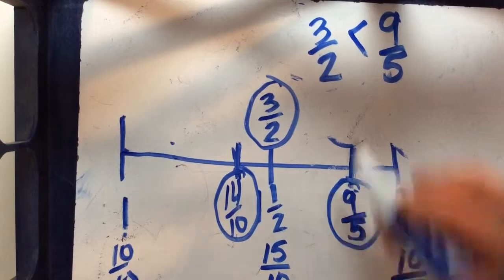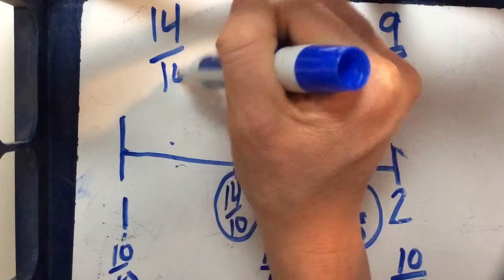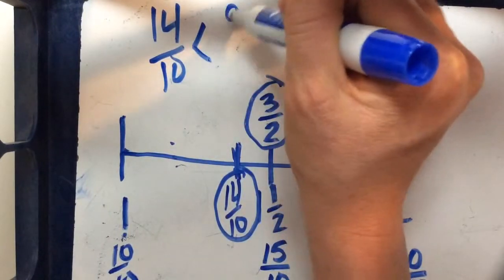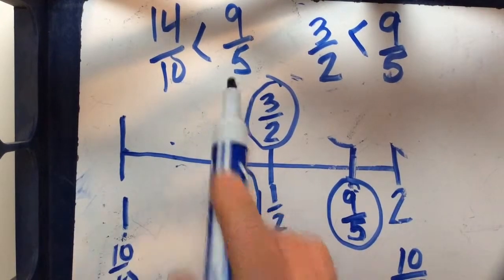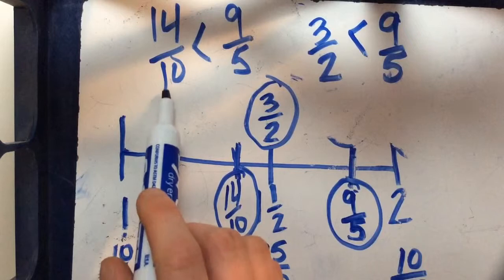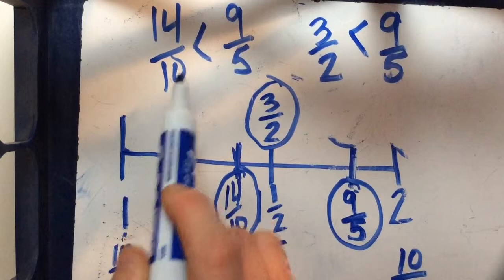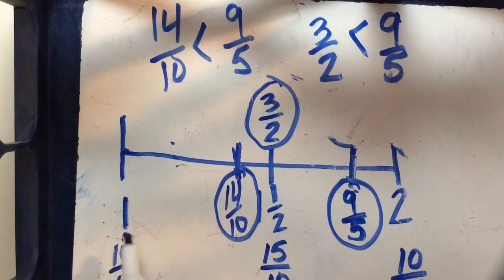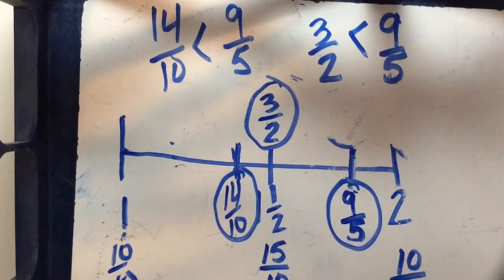I could say 14 tenths is less than 9 fifths. Even though these numbers are smaller, you might notice this fraction, this improper fraction is smaller. And we can tell that we have our evidence because we used our benchmarks of 1, 2, and 1 and 1 half to compare our improper fractions on a number line.